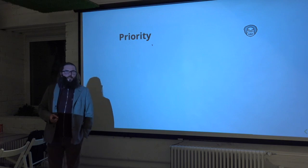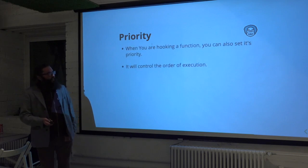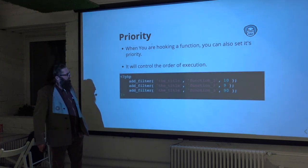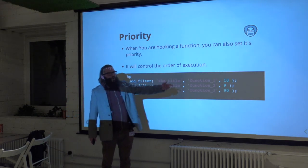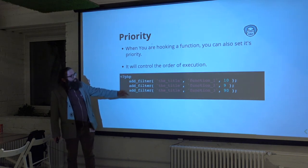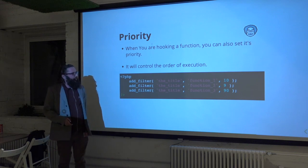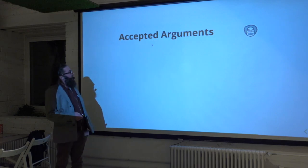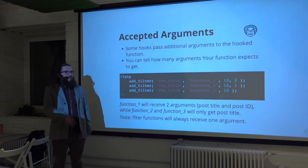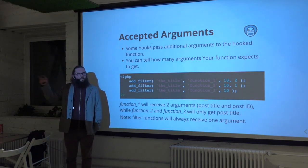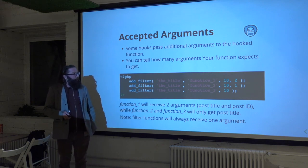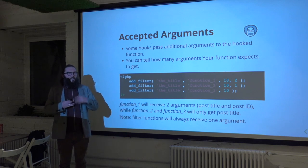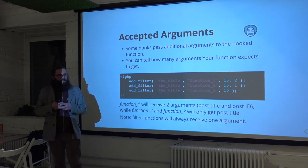Another important thing: plugins don't have to compete which one gets loaded first, because you can set the priority for when each function gets executed on that hook. If you have three functions hooked on the same hook, you can say which one goes first with a lower priority number — 9 goes before 10, and that goes before 90. You can actually use fractions here, which is sometimes useful. There is also a third parameter that says how many arguments you want to receive. Priority defaults to 10 — if you want to go earlier, use less than 10; if you want to go later than most plugins, use more than 10.